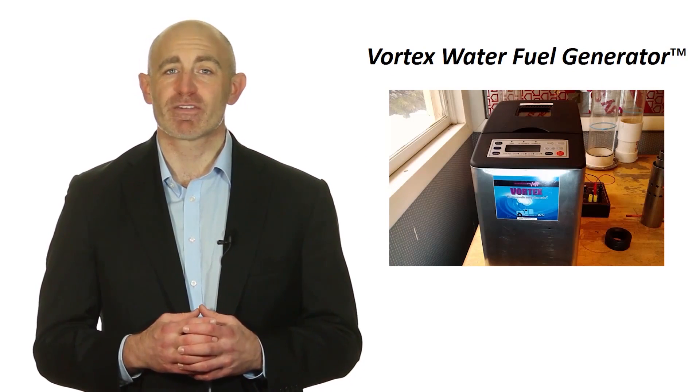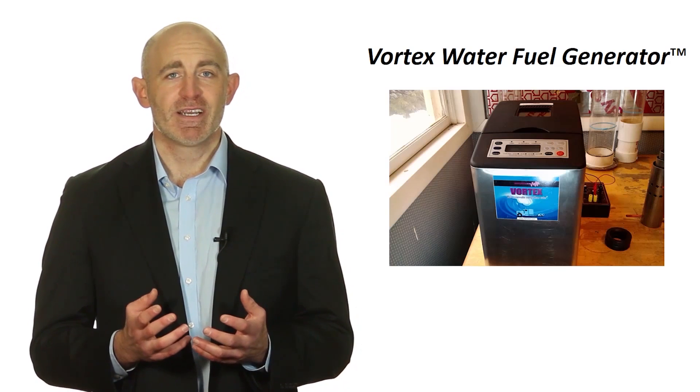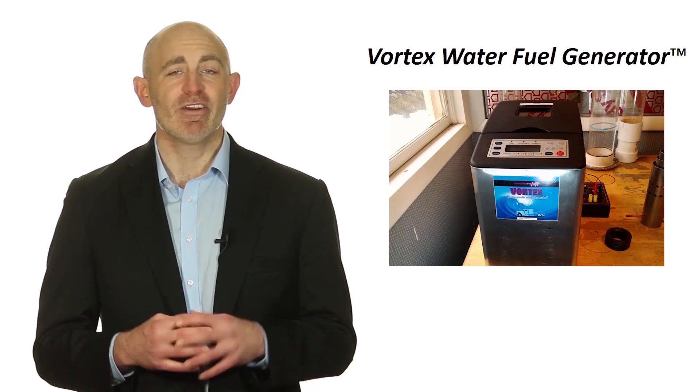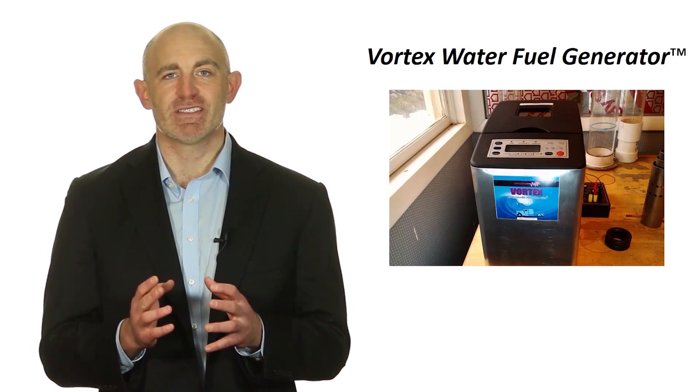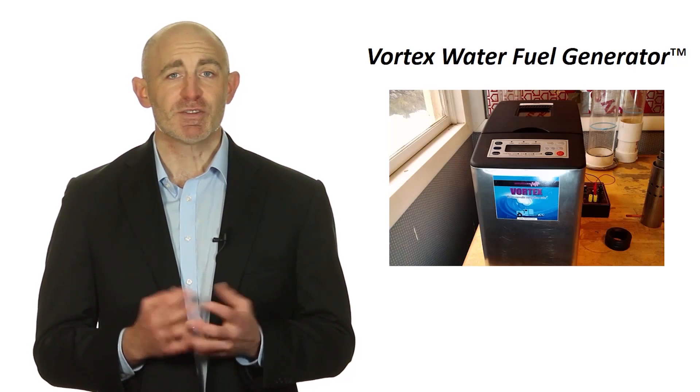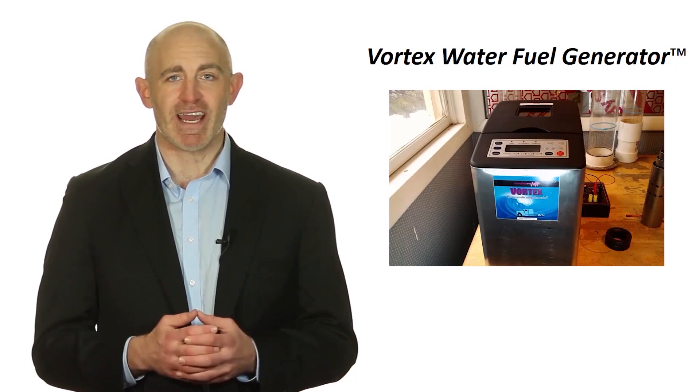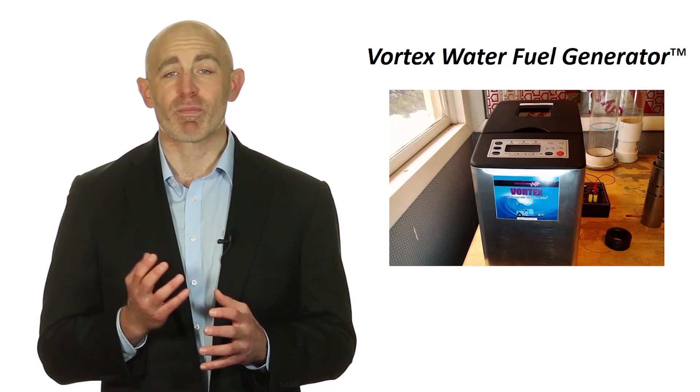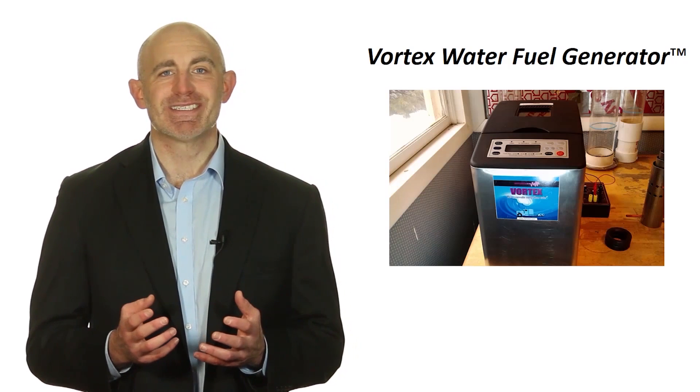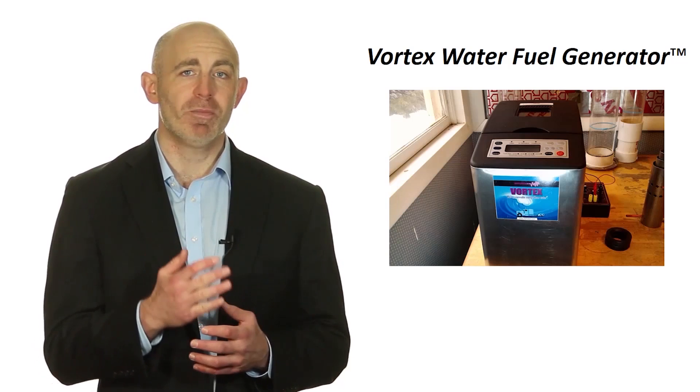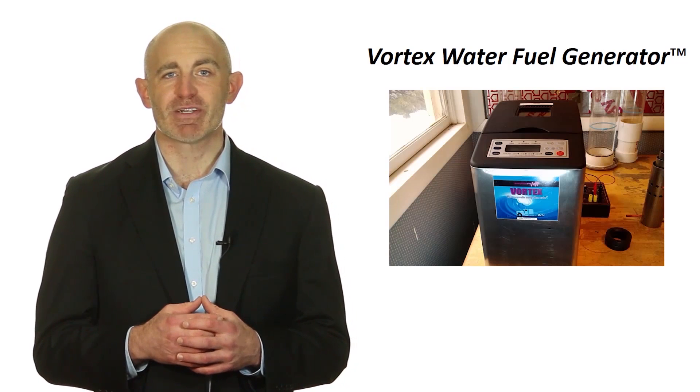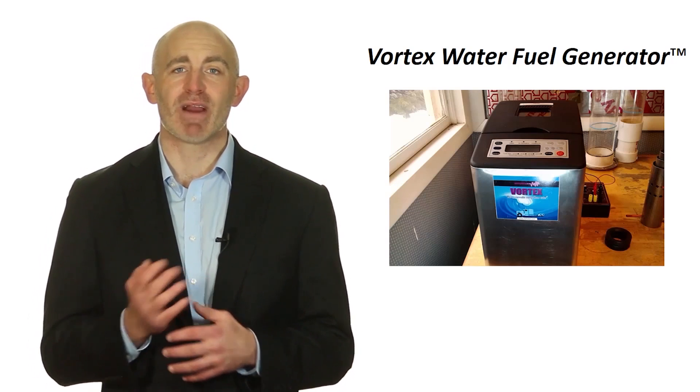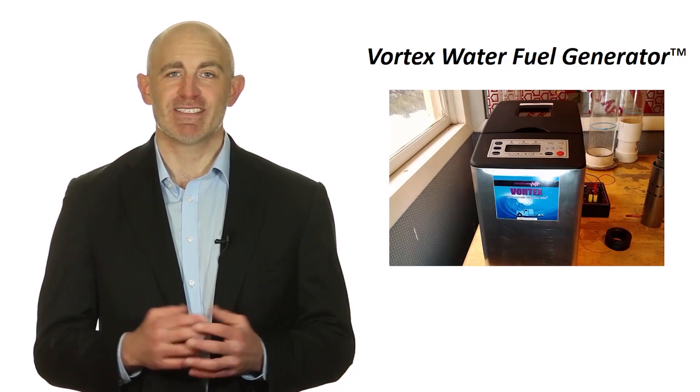My new Vortex water fuel generator in the picture can produce enough Brown's gas to heat your home and provide electricity off the grid. Because it produces its own fuel, Brown's gas, you may never have to pay for electricity or heating oil or propane again. All you would need to do is connect the output tube to a propane fuel generator using an adapter kit to switch from propane to Brown's gas. It really is that simple.